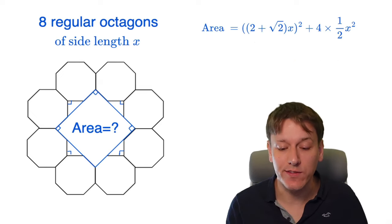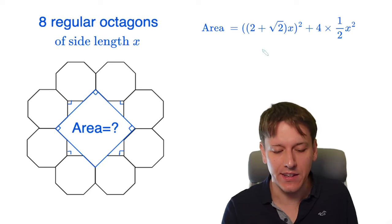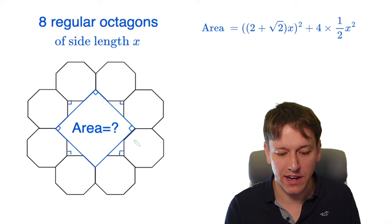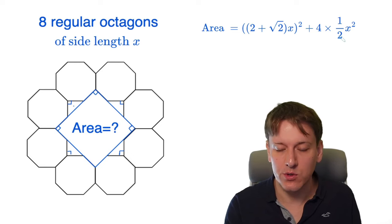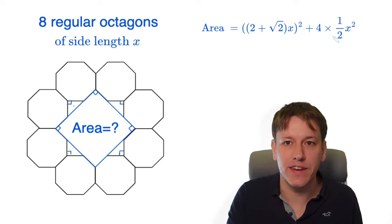So the total area we're looking for is 2 plus root 2x all squared, because the area of a square is just the side length squared. And then four of those small triangles, which all had area a half x squared, so I've got four lots of a half x squared.